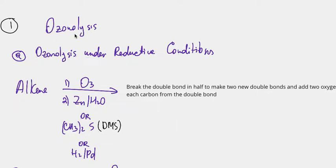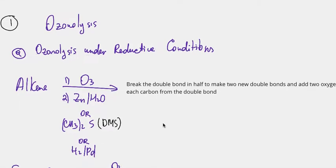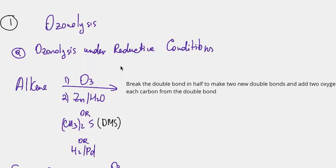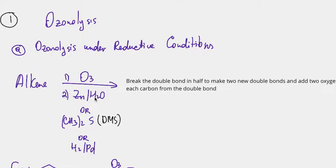The first reaction we're going to learn is ozonolysis. There are two versions: the first is ozonolysis under reductive conditions, and the second is ozonolysis under oxidative conditions. The reagent for ozonolysis under reductive conditions is first step O3, and the second step could be any one of these: Zn/H2O, (CH3)2S abbreviated as DMS by some professors, or H2/Pd. Any one of these second steps would work.